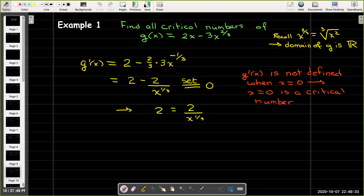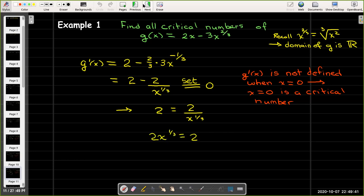So now let's go back and solve this equation. I'll get 2 equals 2 over x to the one third power, which means 2x to the one third power equals 2, and that leads to x equaling 1. So I have two critical numbers, x equals zero and x equals 1.